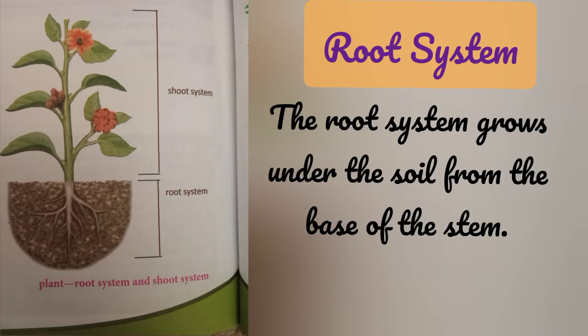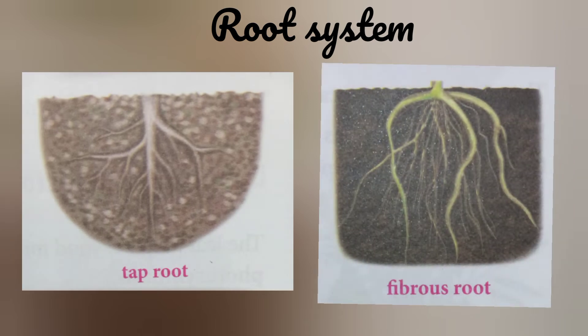Let's see what is the root system. The root system grows under the soil from the base of the stem. The root system is mainly of two types: tap root system and fibrous root system.